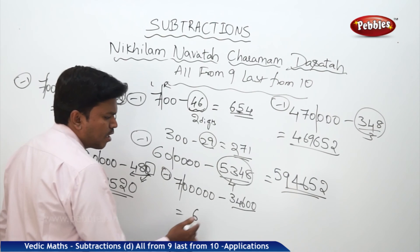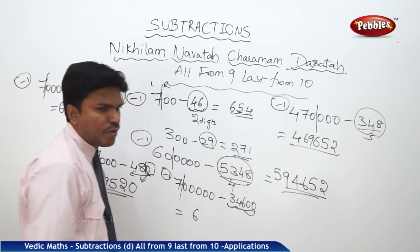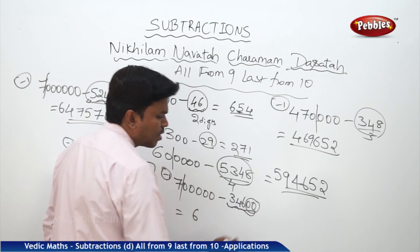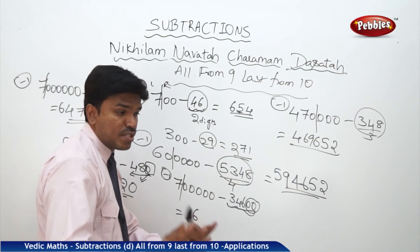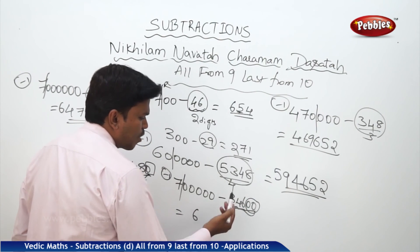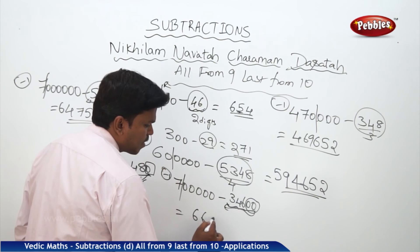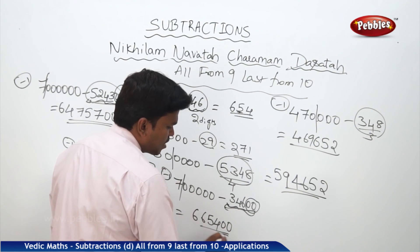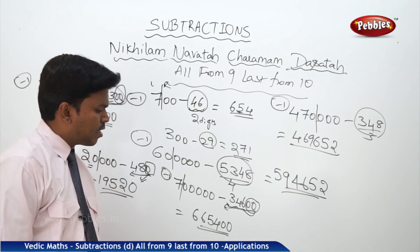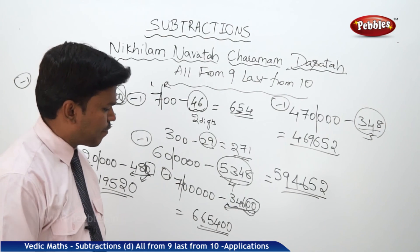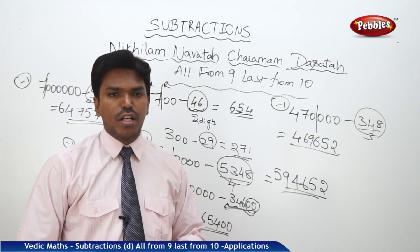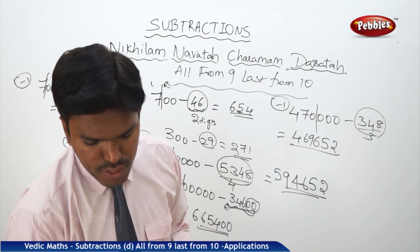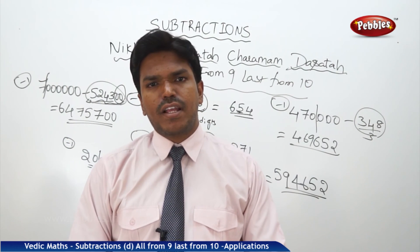For the remaining numbers, apply All from 9, Last from 10. Ignore the last two zeros for some time. For 350, it is — applying the complement to 35 gives 6, 5 — and drop the zeros as they are. So what is your answer? Six lakhs, sixty-five thousand, four hundred. That is how you can do the subtractions in an easy way.